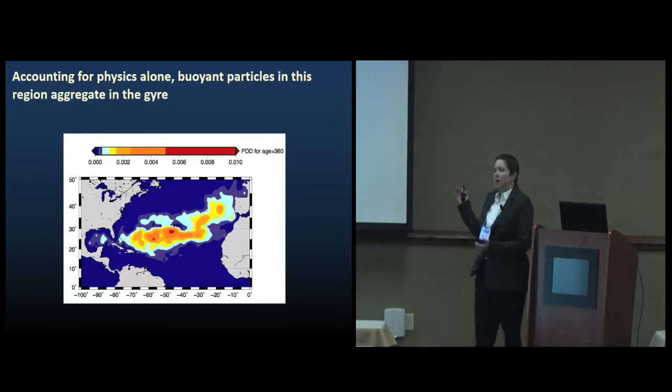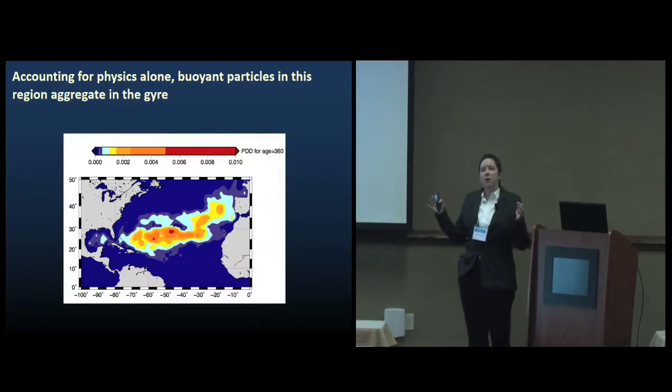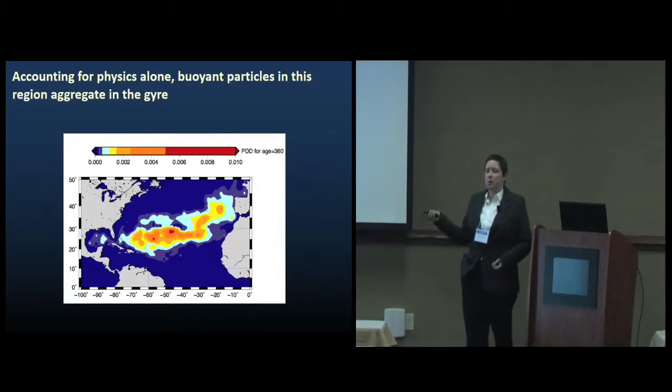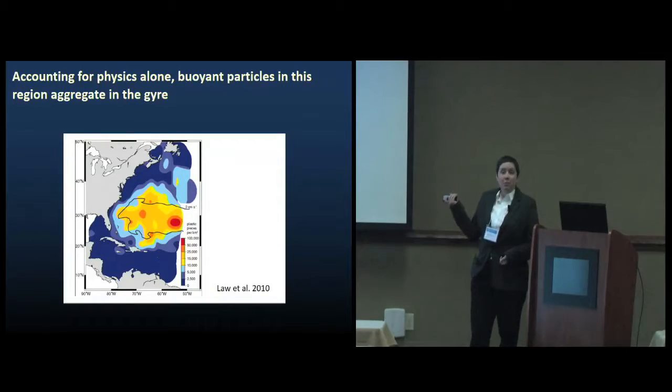I'm going to start off with some of the physics and work my way up in complexity here. Some previous work that I had done just looking at random distributions of particles in the Atlantic in a coarse resolution model showed that particles after an annual time scale tend to aggregate in the center of the subtropical gyre. That's not really what we want to see when we're thinking about sargassum, but it does a pretty good job of capturing the plastic distribution. It's not so good for sargassum.